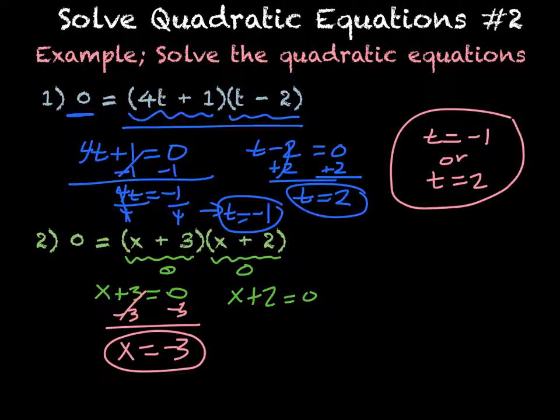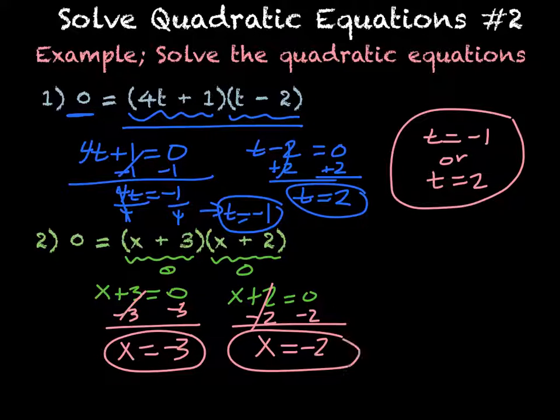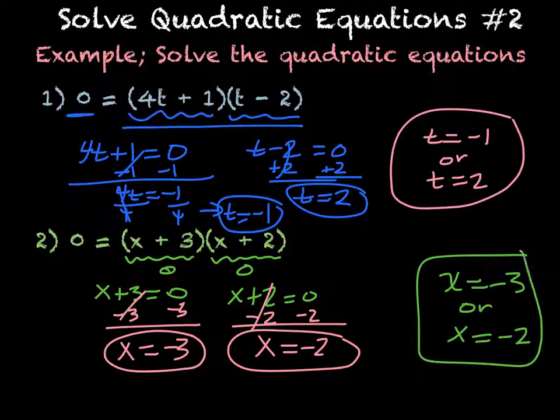And the other one, I'm going to subtract 2 from both sides, leaving me with x = -2. So your final answer is x = -3 or x = -2. That's your final answer.